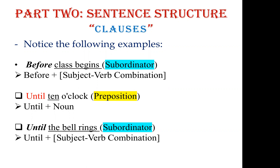To summarize: when before, after, or until comes before a subject-verb combination, it functions as a subordinator. When followed by a noun only, it is a preposition. For example, 'until 10 o'clock' — preposition; 'until the bell rings' — subordinator, because 'the bell' is the subject and 'rings' is the verb.